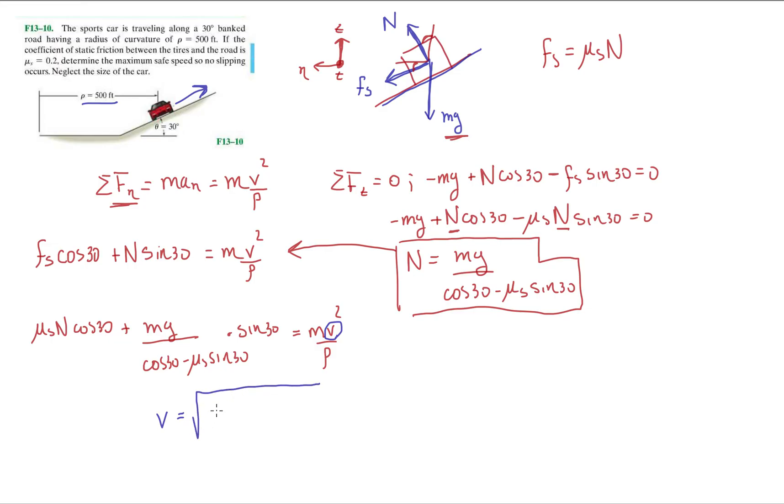So mu s times N cosine 30 plus mg over cosine 30 minus mu s sine 30 times sine 30 equals mv squared over rho. So I know this is pretty much pure algebra. So after this, we have to isolate. We're trying to isolate the v here. So when we do that, we should get like a pretty crazy term. We should get v equals square root of mg times some term, and you should end up getting 118.95 feet per second.